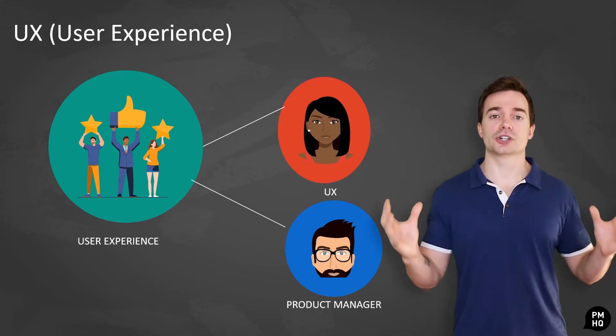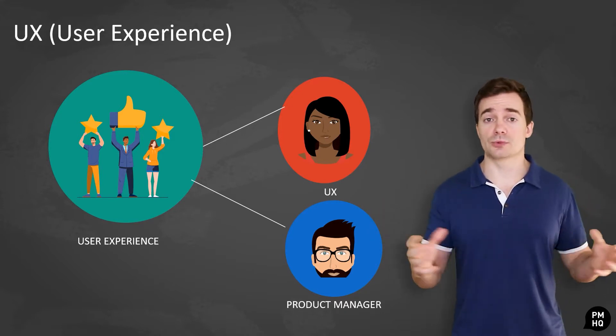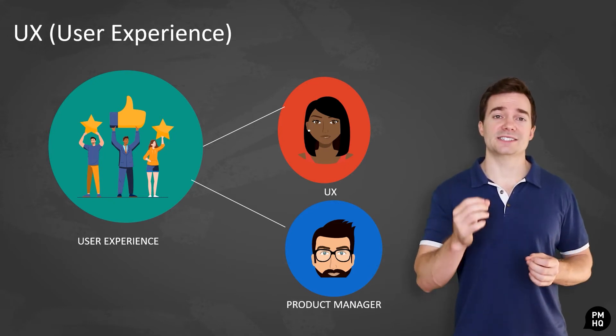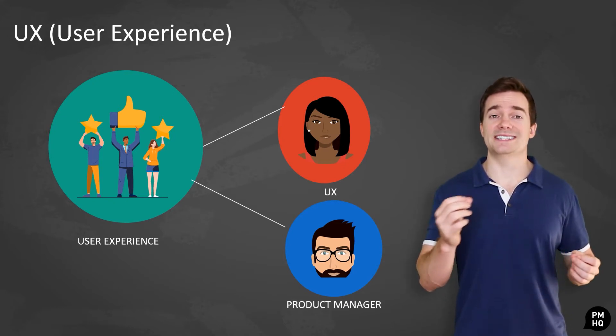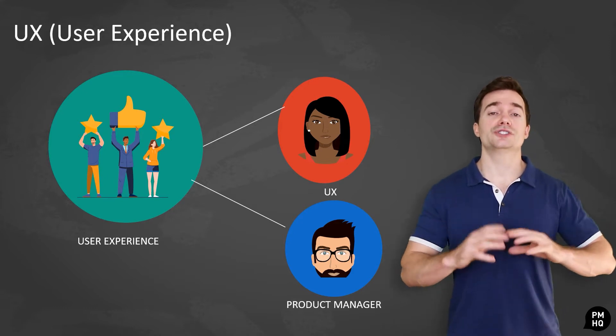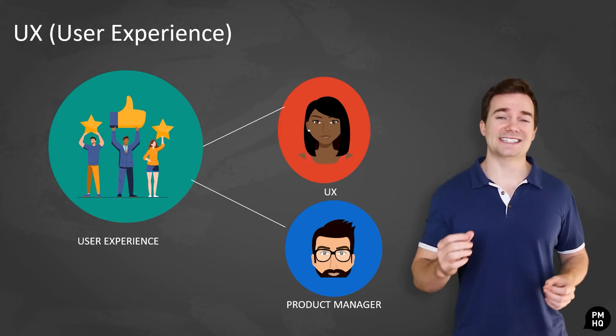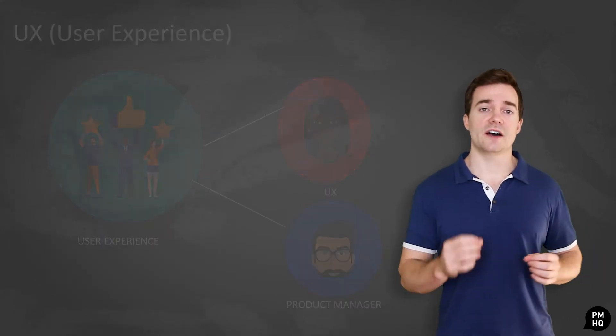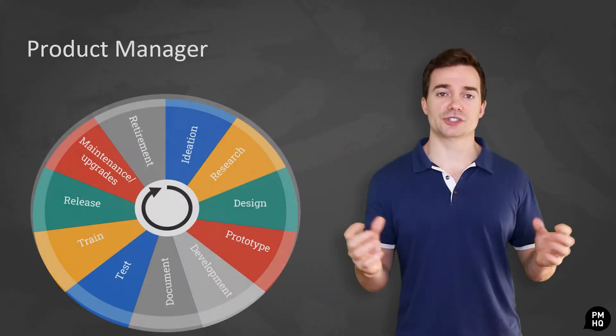But as teams get larger and stakeholders become more numerous, the two roles split into more specialized positions. This makes sense because in such cases it becomes difficult for one person to take on so many tasks and responsibilities and still be effective in delivering the product. Let's kick things off by taking a look at what product managers do in the team.